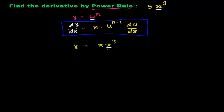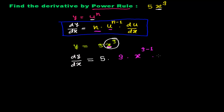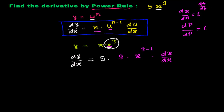Now I need to concentrate on those two things. The derivative of y with respect to x equals: first write the coefficient 5, then apply the power rule to x to the power 9. Power 9 times the variable x raised to the power minus 1, then times the derivative of x with respect to x. The derivative of any variable with respect to itself is always 1 — so dx/dx equals 1.